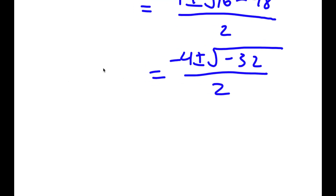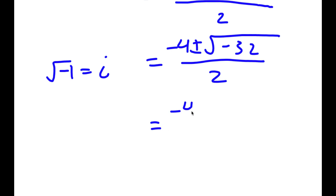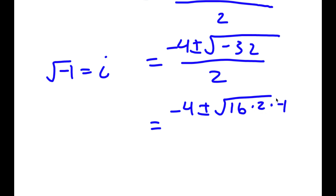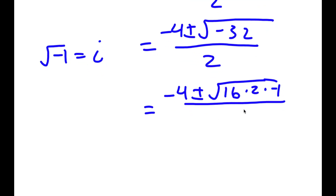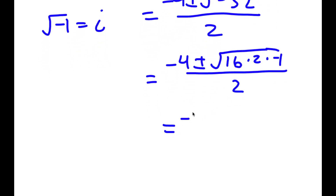The square root of negative 1 equals i, which is an imaginary number. So I have negative 4 plus or minus the square root of negative 32. This is the same as 16 times 2 times negative 1. The square root of 16 is 4, so that comes outside, leaving 4 times the square root of 2 times i.